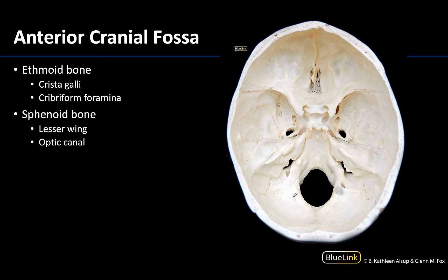Let's talk about the structures within the anterior cranial fossa first. From the lesser wing of the sphenoid to the frontal bone, we are in the anterior cranial fossa. I am now outlining what we can see of the ethmoid bone in this view — we'll see the ethmoid bone in numerous other regions, including within the orbit and playing a role in the nasal septum. It's a fairly distinctive-looking area, and you have this projection right here which is referred to as the crista galli.